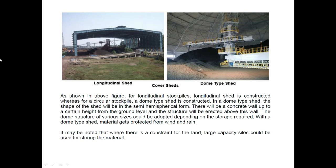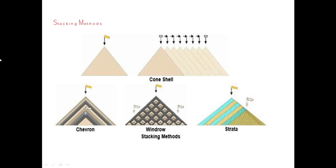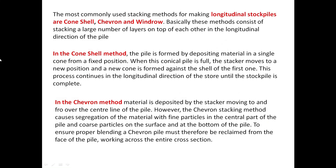Within a dome-type shed, material is protected from wind and rain. Where there is a constraint on land, large-capacity silos are used for storing material. The most commonly used stacking methods for making longitudinal stockpiles are cone shell, chevron, and windrow. These methods consist of stacking a large number of layers on top of each other in the longitudinal direction of the pile.